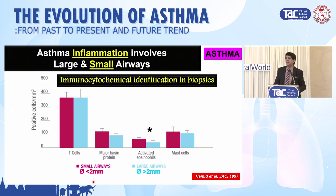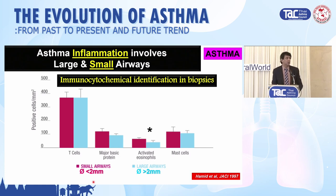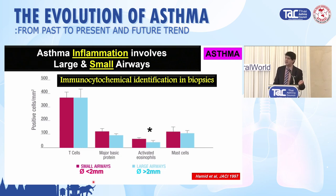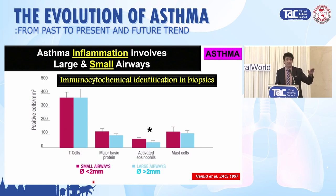One slide I've taken is from Kutayba Hamid. The red bar is transbronchial biopsy of the small airways; the blue bar is endobronchial biopsy of the large airways. Looking at the x-axis, it doesn't matter which cell — those cells are present in large and small airways. So it is a carpet of inflammation that is present throughout the whole of the airway tree.